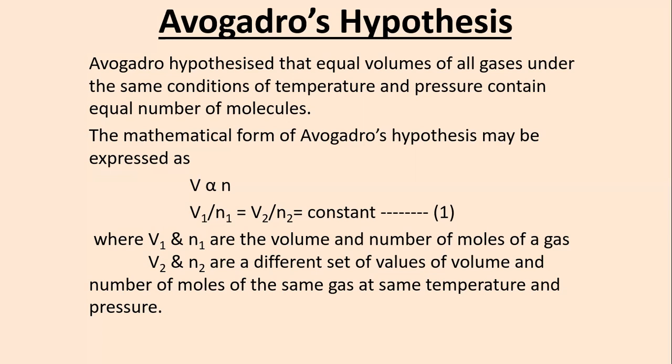The mathematical form of Avogadro's hypothesis may be expressed as V is directly proportional to n. For different conditions, V1/n1 = V2/n2 = constant, where V1 and n1 are the volume and number of moles. V2 and n2 are a different set of values of volume and number of moles of the same gas at the same temperature and pressure.